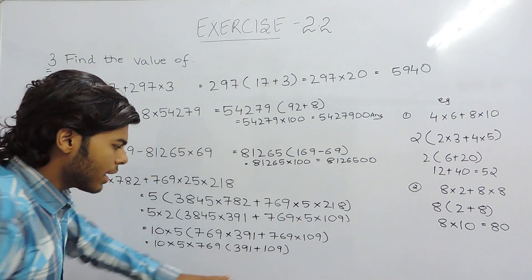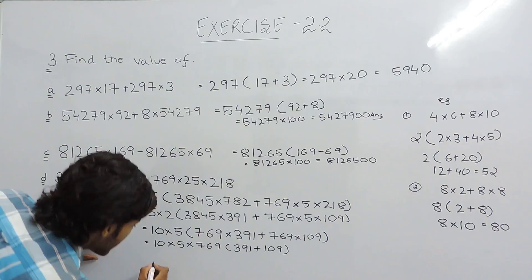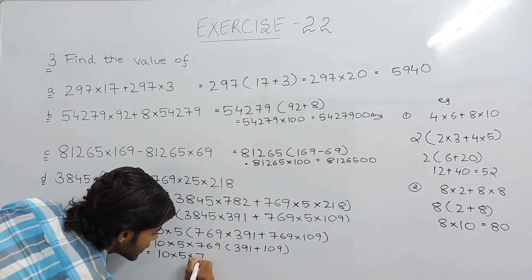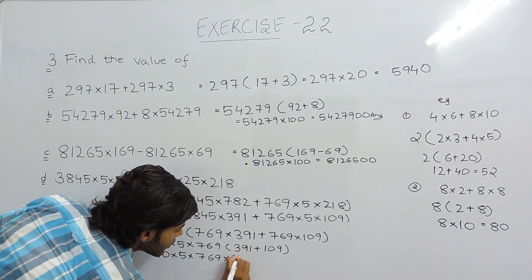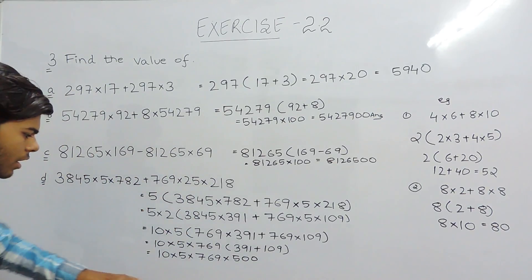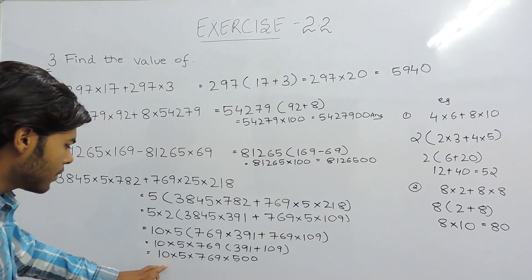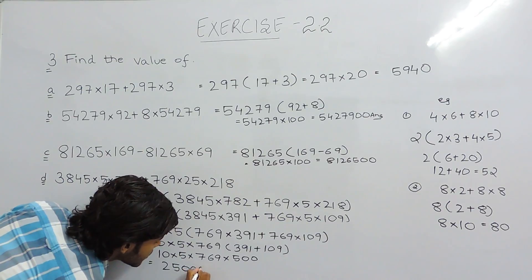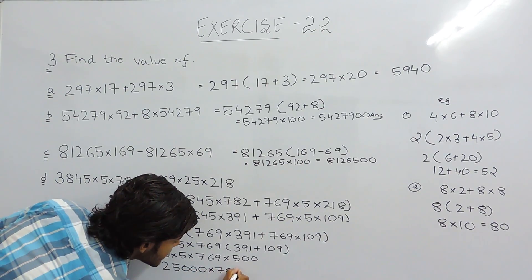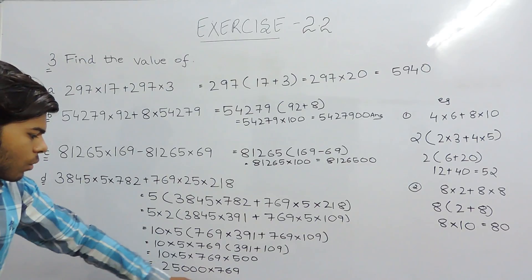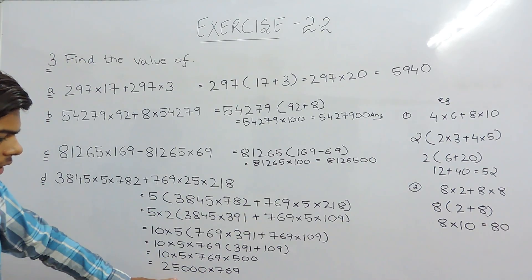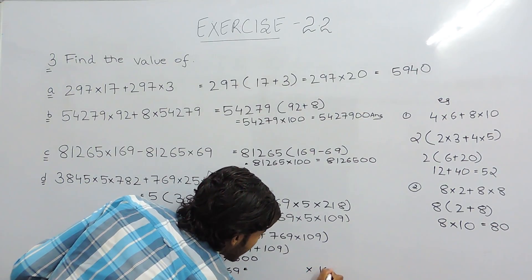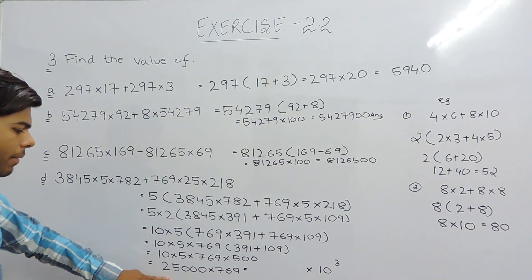Inside the bracket, 391 + 109: adding 9 to 391 gives 400, and 100 more gives 500. So it becomes 10×5×769×500, which simplifies to 2500×10 = 25000, and then 10×769×769... so we need to multiply 769 by 25. The required answer will be 10³×769×25, which we need to calculate.